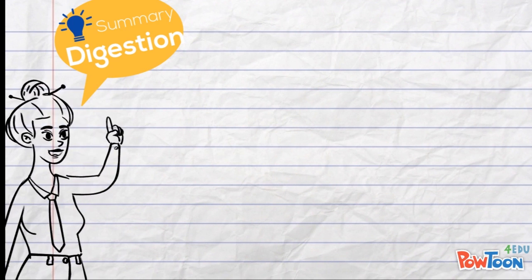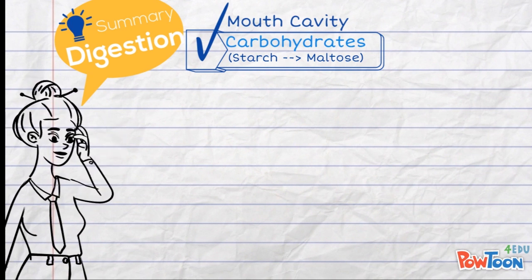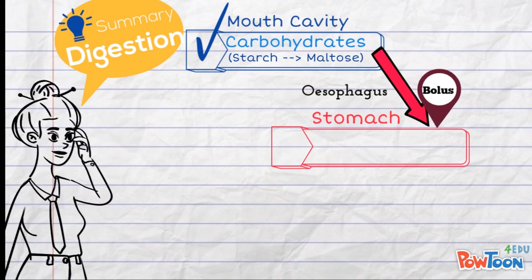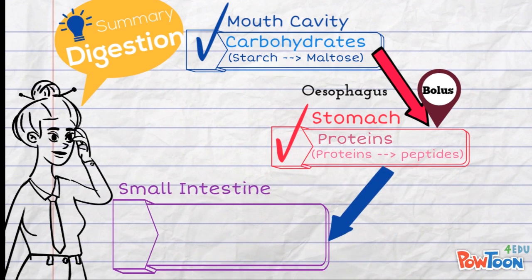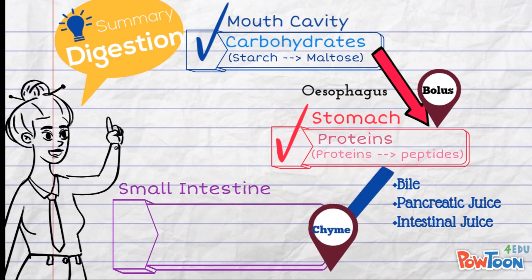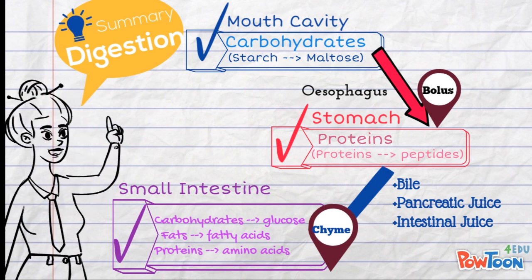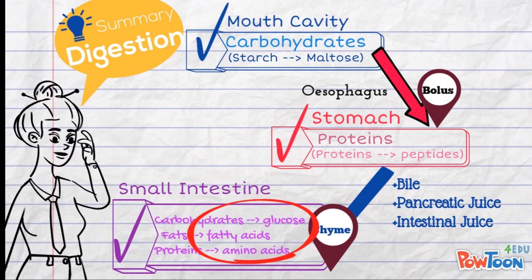Here's a quick summary of substances digested in different parts of the system. In the mouth cavity, carbohydrates are first digested from starch to maltose. The bolus then passes through the esophagus to the stomach, where proteins are digested into peptides. Then the chyme is transported to the small intestine, where with the help of the three digestive juices, all food substances are digested into their simplest forms — glucose, amino acids, and fatty acids — ready to be absorbed.